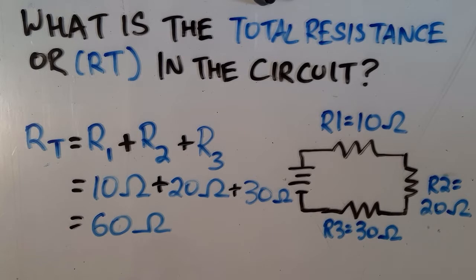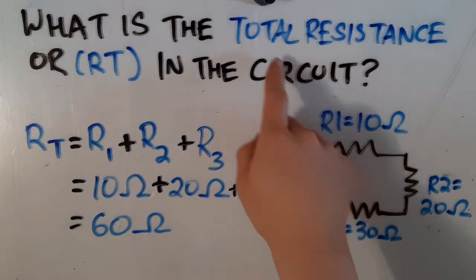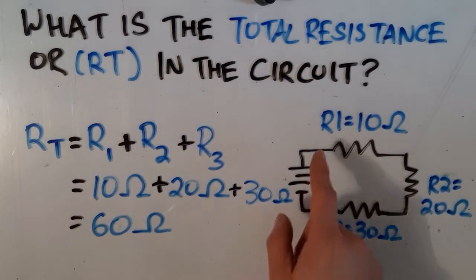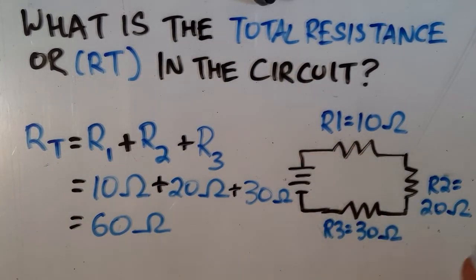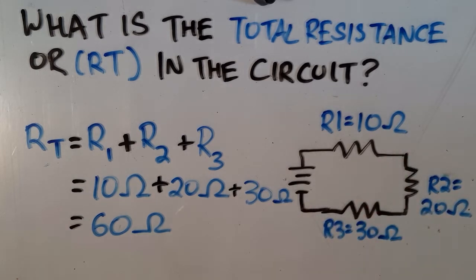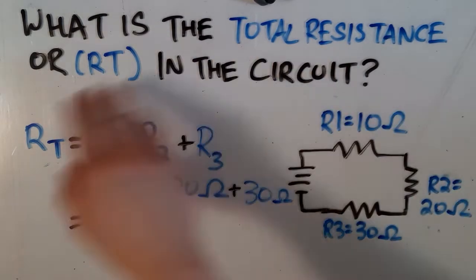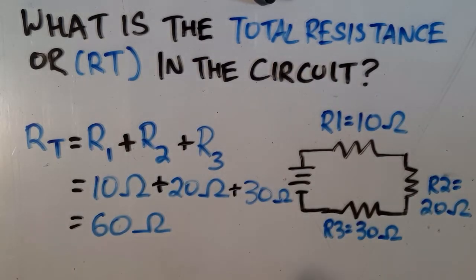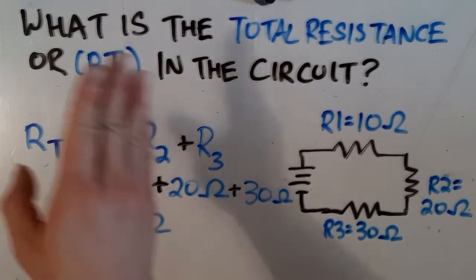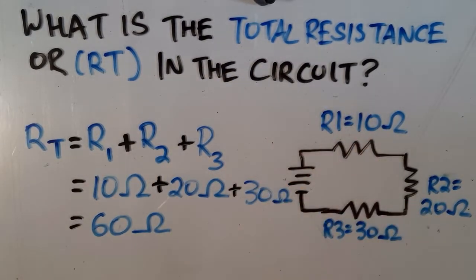I'd just like to caution you: if you're calculating total resistance in a circuit where there are multiple paths or branches for the electrons to flow — those are called parallel circuits — the formula is a bit different. But we're just focusing on series circuits for today, so when you're asked to calculate total resistance, all you have to do is add the values of all the resistors.